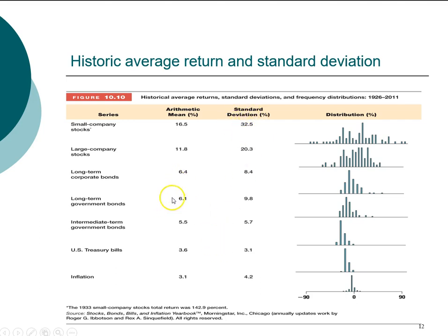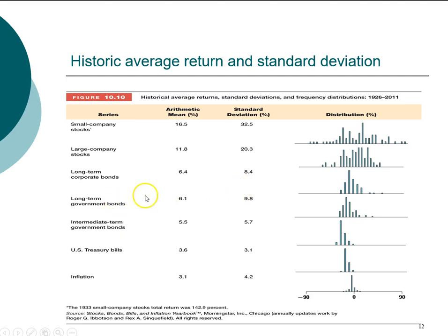The exception is long-term government bonds. Government bonds actually have a higher risk than corporate bonds, and part of the reason is that government bonds typically have even longer maturity than most corporate bonds — there are a lot of government bonds that are 30 years. Compared to intermediate corporate bonds, intermediate government bonds have a lower return and also a lower risk.